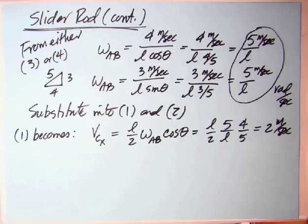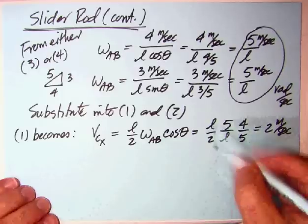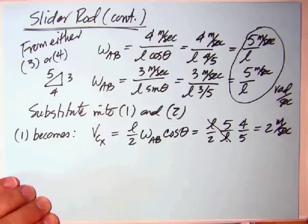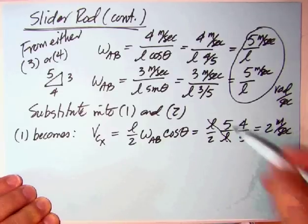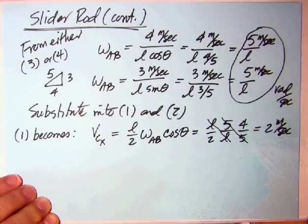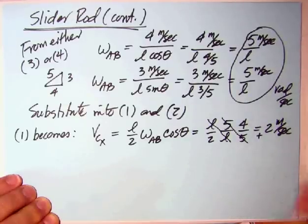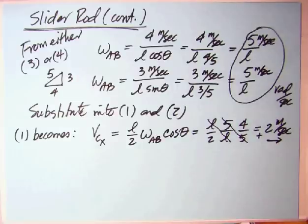We can do these one at a time. One becomes, VCX was equal to 0, plus L over 2 times 5 over L, so the L's cancel. Also, the 5's cancel. So you're left with 4 over 2, or 2 meters per second. And realize, you came out with positive, so therefore it is, in fact, to the right, which is what you thought anyway.